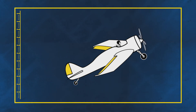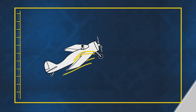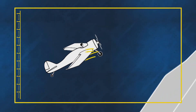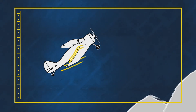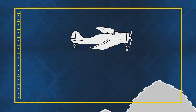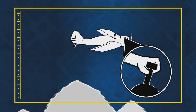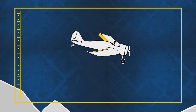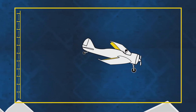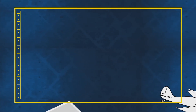Once airborne, control surfaces on the wings and tail allow the pilot to change the flow of air and alter direction and altitude. To land, the pilot eases back on the throttle and reduces airspeed, using the flaps on the wings to maintain lift and avoid a stall.